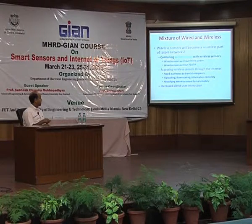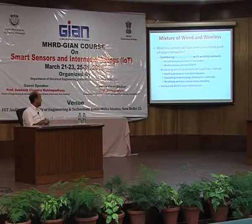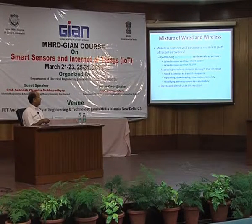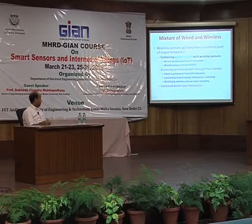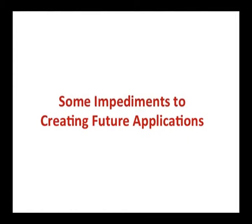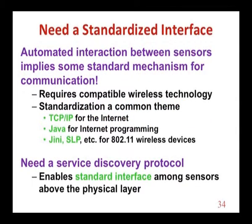Through the internet, we need gateways and uploading and downloading of information. How can you modify a task remotely? These are the things that will happen. At the moment we do not have any standard for the internet of things, and we need that. Different companies are following their own standards, which will not be easy to replace because there is a business issue. We need compatible sensors, compatible standards, and compatible technology so that we can achieve interoperability.